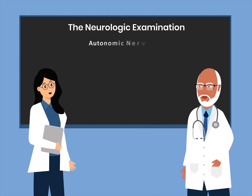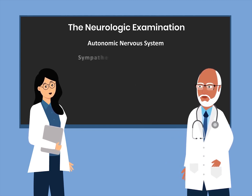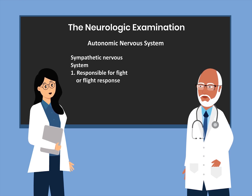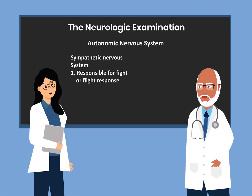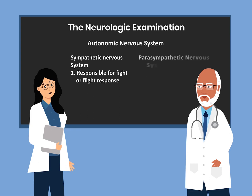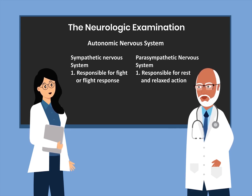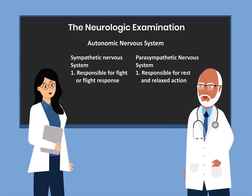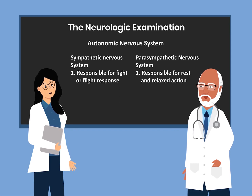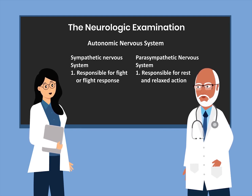and also the autonomic nervous system, which is responsible for involuntary action. The autonomic nervous system can be divided into the sympathetic nervous system, which is responsible for the fight or flight response, or the parasympathetic nervous system, which is responsible for rest and relaxed action.